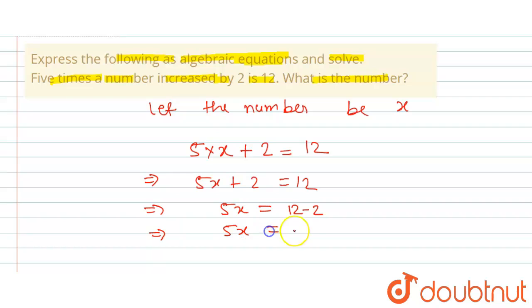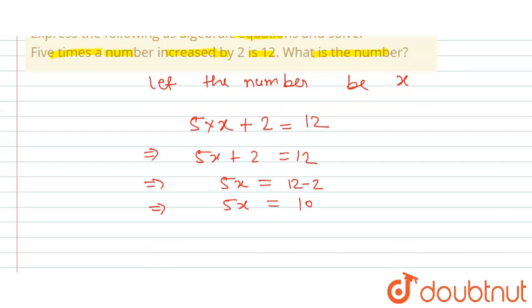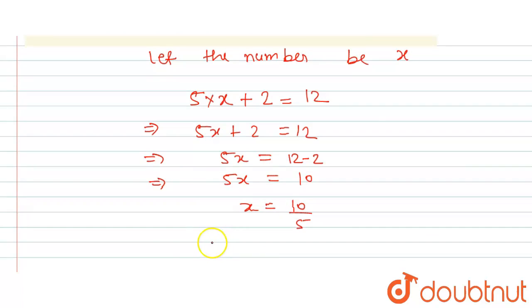So 5x is equal to 10. So x will be equal to 10 upon 5. We will take 5 out on the right hand side in the denominator of 10. That means we will divide 10...